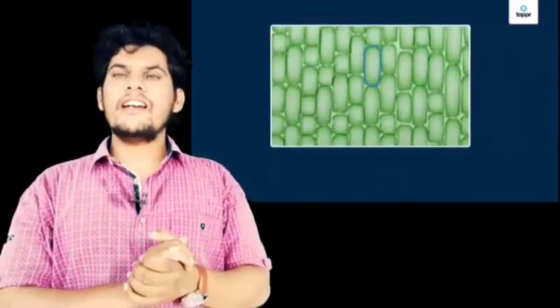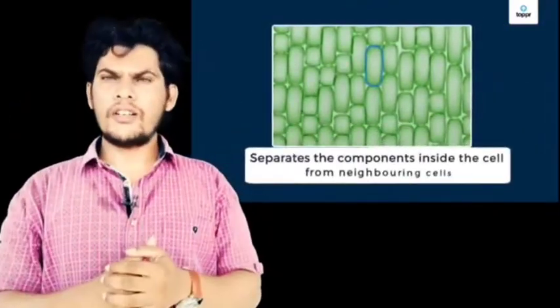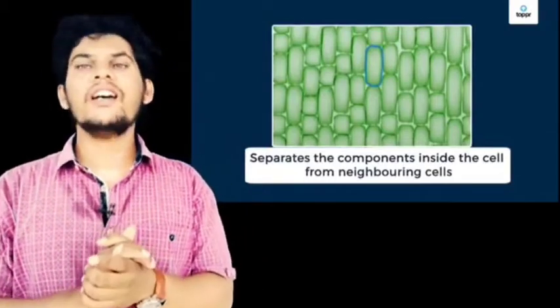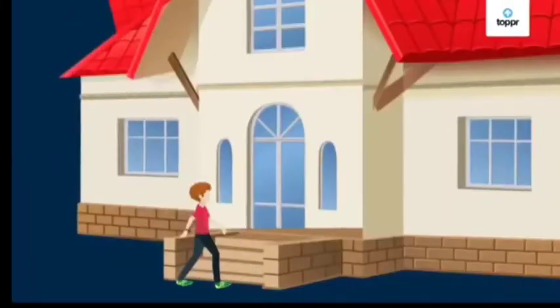Our home walls also protect us from weather — winter, summer, and rainy seasons — as well as from wild animals. Similarly, the cell membrane protects the cell from outer pressure, outer atmosphere, and outer danger. The cell membrane separates the inner portion of the cell from the outer environment.